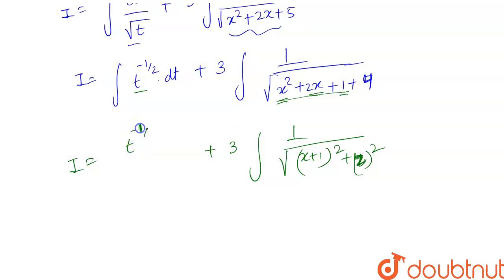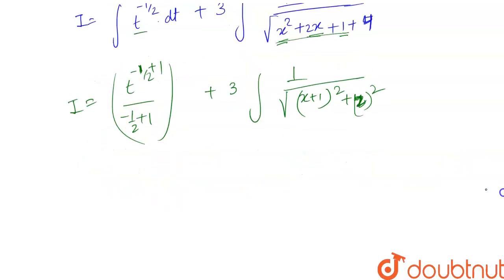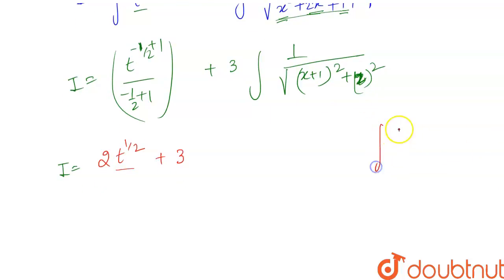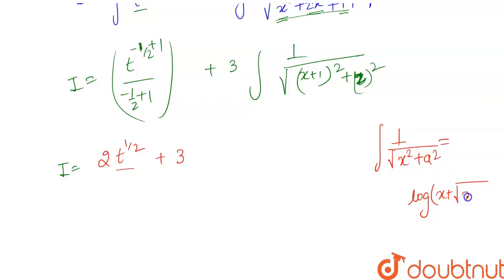Now I becomes: the integration of t^(−1/2) is t^(−1/2 + 1) divided by (−1/2 + 1), which gives t^(1/2) in the numerator and 1/2 in the denominator, simplifying to 2√t. For the second integral, we use the standard formula: ∫1/√(x² + a²) dx = log|x + √(x² + a²)| + C.